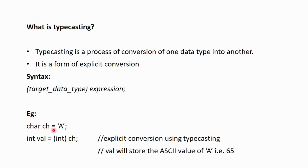For example, char ch is initialized with A. So, ch is a character variable that is holding the character capital A. Int val is another integer variable in which we have casted this character variable. So, we have written int val equals, within parenthesis, int, that is our target data type. And then we have mentioned ch. So, this is explicit conversion using typecasting. Now, val will store the ASCII value of capital A, which is nothing but 65.